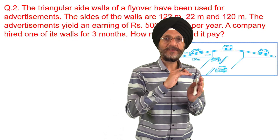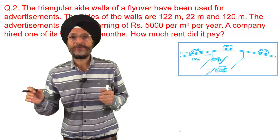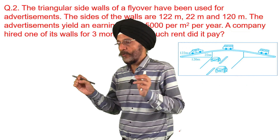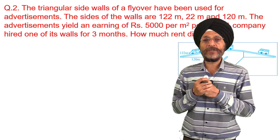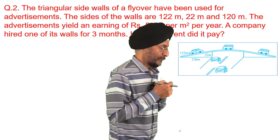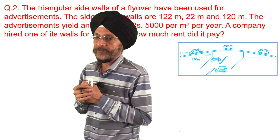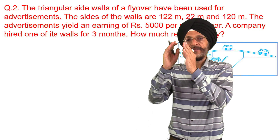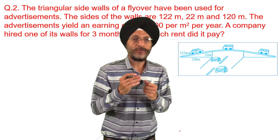Whenever we pass through a flyover, there are walls below the flyover. These walls are given on rent by the authorities for advertisement purposes, and the government or the local authorities earn revenue by way of rent. This question pertains to the income or rent which is earned by giving a particular side of the wall on rent. Let us see what the question is.